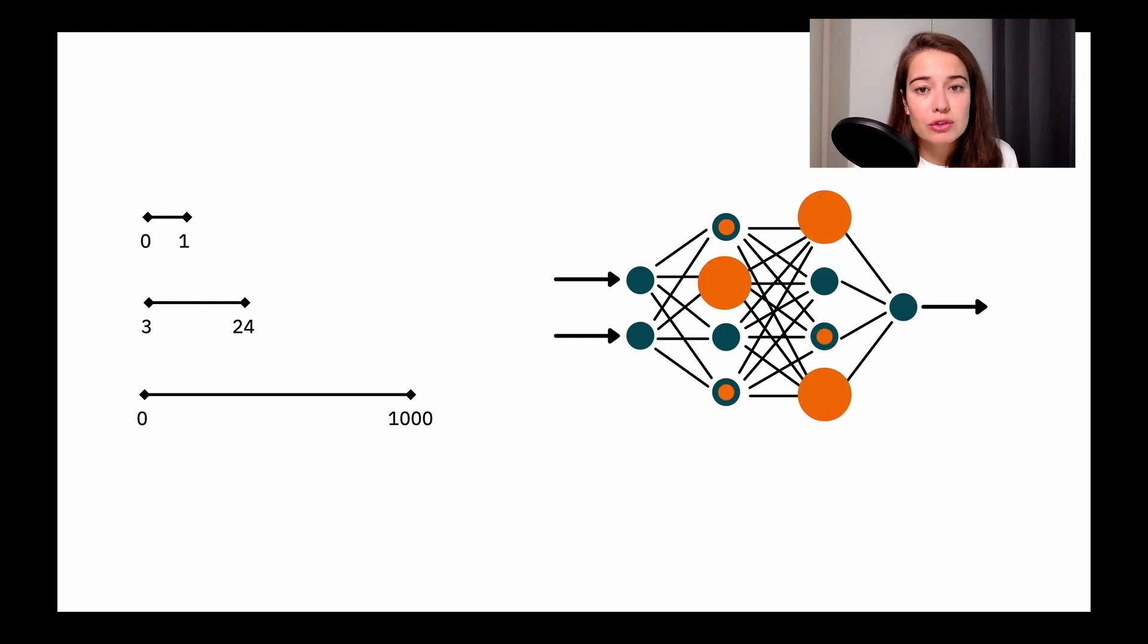And why we do that is because if we don't do it, we are going to have an unstable network. And what that means is we might have some weights that are going to be very high and some weights that are going to be very low. And this might cause, in turn, either the exploding gradients problem or the vanishing gradients problem. So that's why we want our inputs to be normalized and in the same scale.